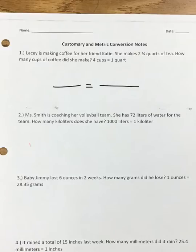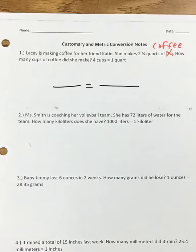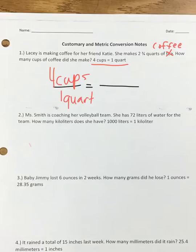In the first part you are going to write the conversion that they give you. In this problem it says Lacey is making coffee for her friend Katie — she makes two and three-fourths quarts of coffee. We need to figure out how many cups of coffee she made. The conversion is: four cups equals one quart.